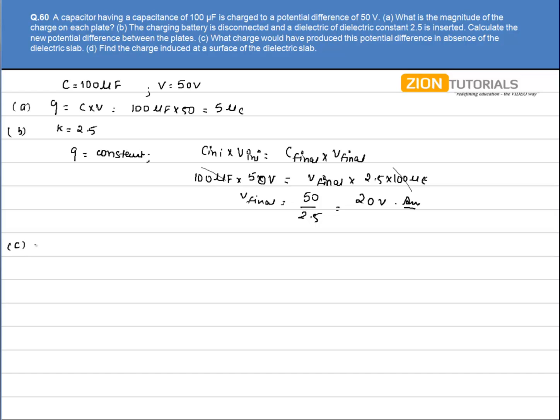In the third part, we have to calculate what charge would have produced this potential difference in the absence of the dielectric slab. In the absence of the dielectric slab, we have capacitance as 100μF.